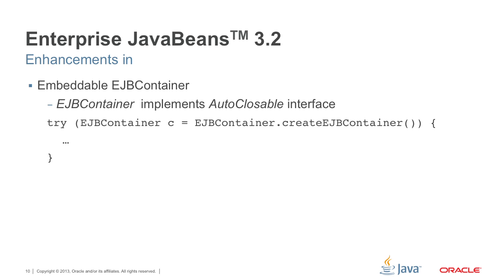Embeddable EJB container. The EJB container has a close method that is optional but good practice to call. When you use it, you need a try-finally block — so it was a natural choice for the EJB container to now implement the AutoCloseable interface, allowing you to use the try-with-resources statement, which will explicitly close the container for you.